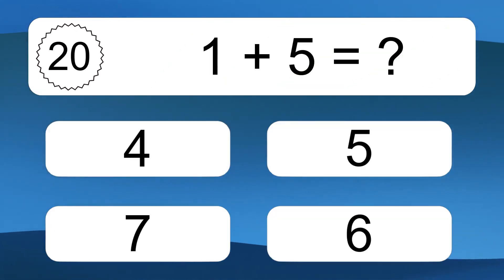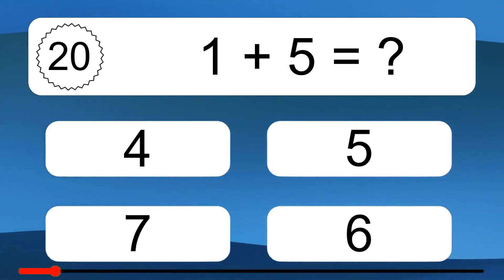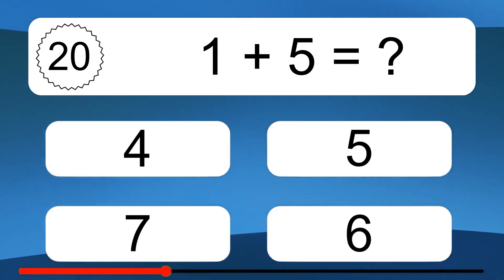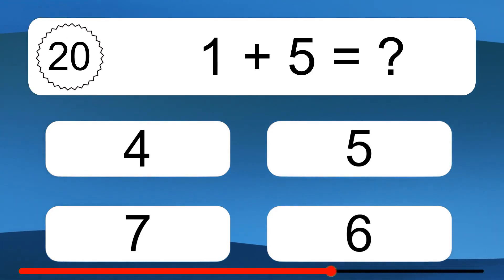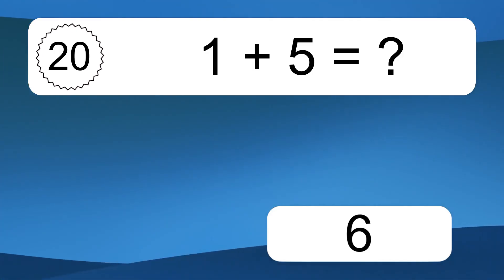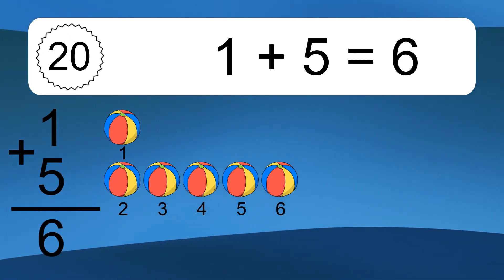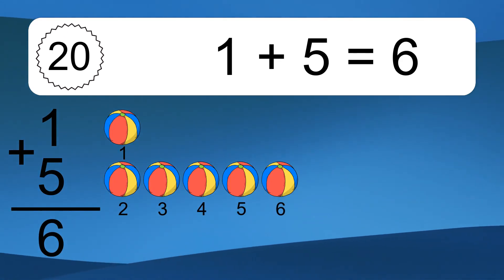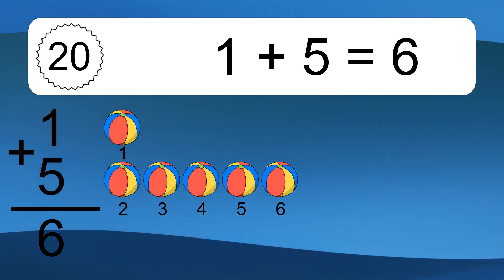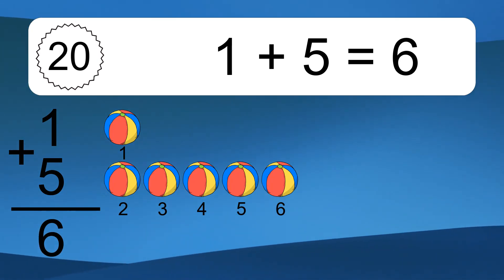1 plus 5 equals what? 1 plus 5 equals 6. Let's count it: 1, 2, 3, 4, 5, 6.